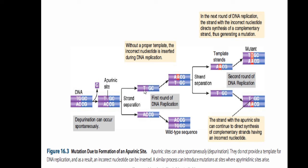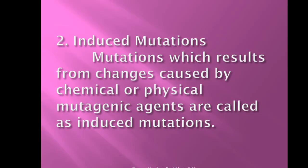In the parent DNA molecule there was guanine, but because of depurination that base is missing, so adenine is incorrectly added during replication. In the first round of replication, two daughter DNA molecules are formed: one has the wild type sequence and another is a mutant DNA molecule. In the second round of replication, the mutant strand continues to direct synthesis of complementary strands having the incorrect nucleotide. A strand with the apurinic site can continue to direct synthesis of complementary strands with incorrect nucleotides, perpetuating the mutation.